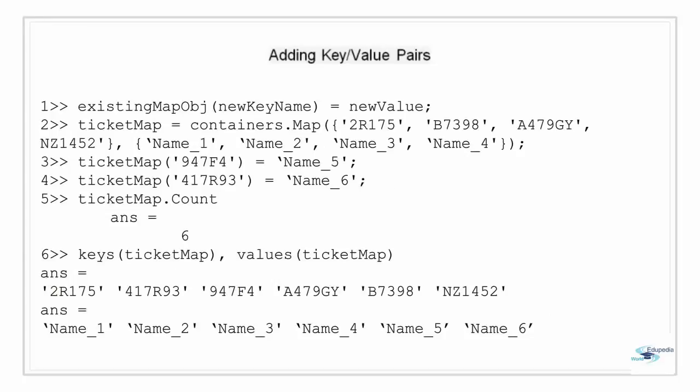Adding key-value pairs: to add content to a map, unlike arrays where we only add a value, each entry in a map consists of both a value and a corresponding key. Whenever we write a new value to a map we must supply its key as well, and the key must have a consistent data type with the existing keys in the map. The syntax to insert elements is shown in line 1. Using the same ticketMap with four entries, I will add two more entries making the total count 6, which we verify by calling the count property. The keys and values methods confirm the two new names and keys have been added.